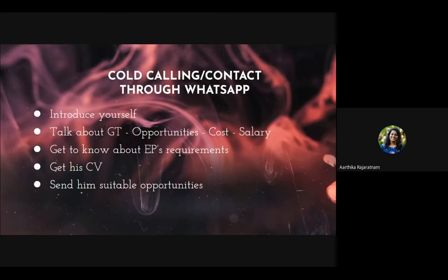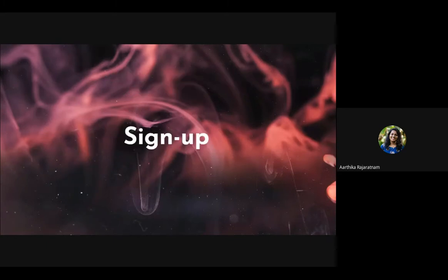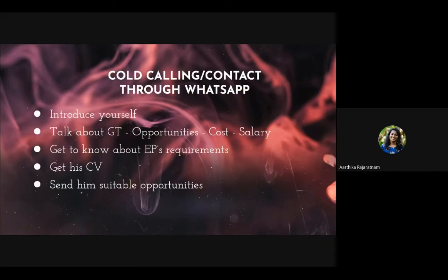After we get a sign-up, we should call or contact that EP via WhatsApp. For the VD team, your team leader will assign you the sign-ups. After they assign you, you have to contact each person. When you first contact them, introduce yourself — that you're from ISAC and you're a member — and then talk about GT, which is basically pitching.